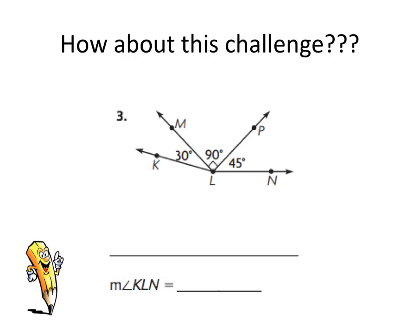And then this is the challenging one. Here, they want us to know the angle for KLN. I don't know that one, but I can tell you that KLM is 30. I can tell you that MLP is 90. And that PLN is 45. So it looks like I need to put all three of those angles together to get this big angle.